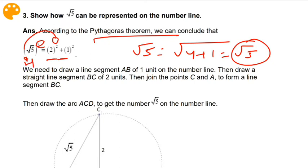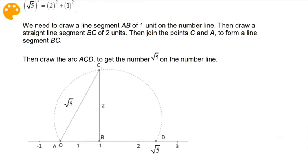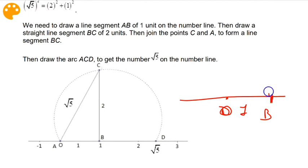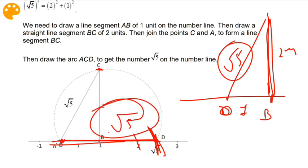To draw this: first, inside your notebook, draw a line and mark a point O. From O, draw a line of 1 centimeter to point B. At point B, draw a perpendicular of 2 centimeters at 90 degrees. When we join O and the top of the perpendicular, the length we get is √5. After that, using a compass, measure the distance OC, and draw an arc on the number line. The line OD represents √5 on the number line.